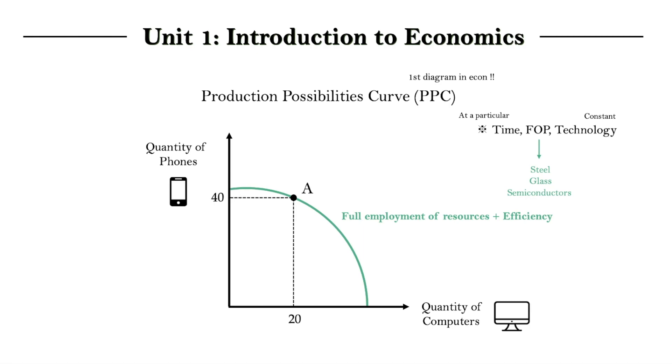And any other point on the curve, such as point B over here, is just another way, another choice of distributing resources. Where, for example, at point B, we're efficiently using all resources to make 14 phones and 45 computers.